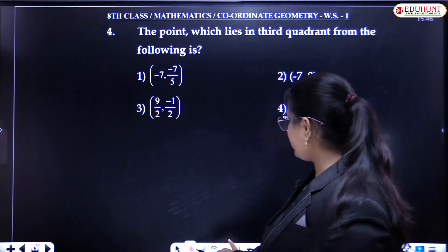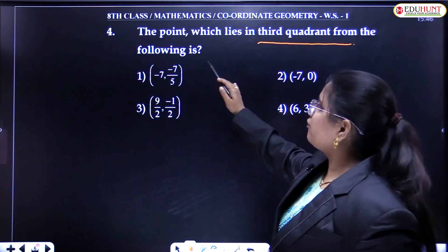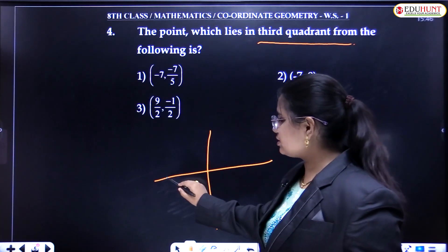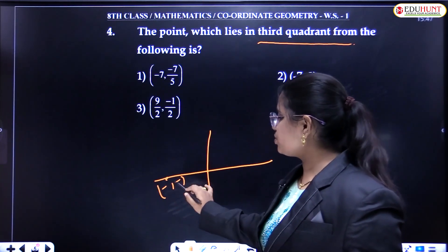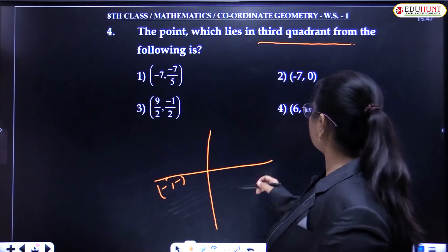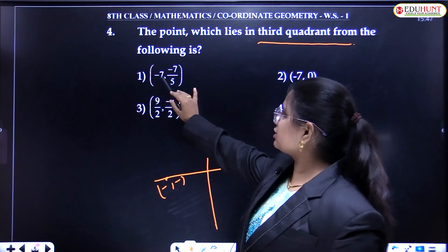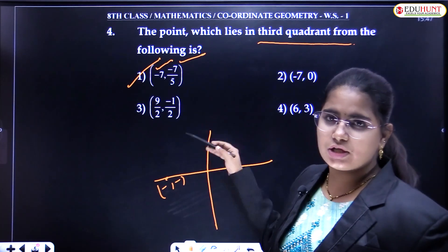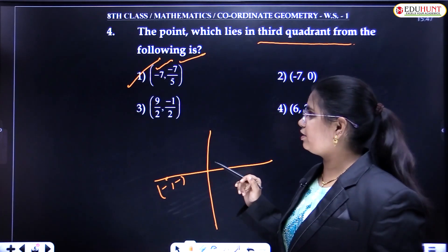Next question: which point from the following lies in the third quadrant? In the third quadrant, X is negative and Y is also negative — both coordinates should be negative. Checking option 1: the X coordinate is negative and the Y coordinate is also negative, so option 1 satisfies the condition. Let's verify the other options as well for clarity.